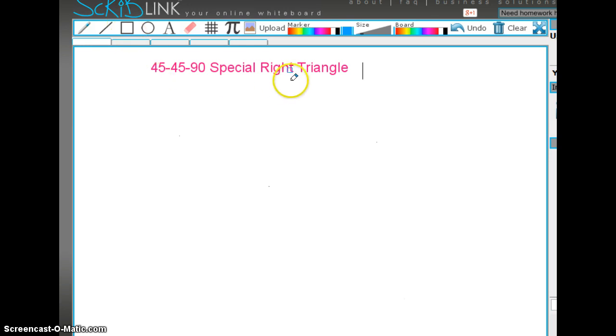The 45-45-90 is really special. It comes from a square. Because a square, all the angles are 90 degrees, and if you were to draw the diagonal, you would come up with this triangle. This would be 90 degrees, and these two angles right here would be 45.